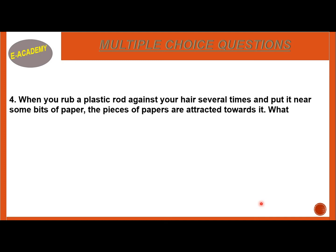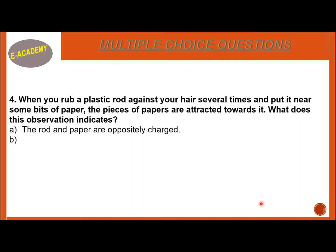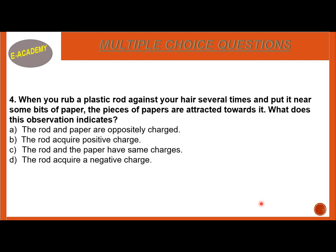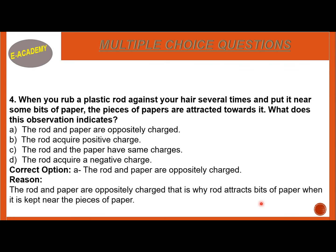MCQ Number 4: When you rub a plastic rod against your hair several times and put it near some bits of paper, the pieces of paper are attracted towards it. What does this observation indicate? When we rub the plastic rod in our hair, it becomes charged. When we bring it near paper pieces, they are attracted to it. The correct answer is that the rod and paper are oppositely charged.